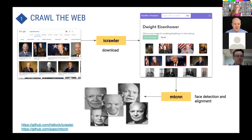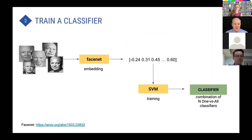After that, we perform face detection and alignment using MTCNN in order to have aligned faces. On these faces, a FaceNet pre-trained model is applied, which enables us to extract a set of features that are then used to train a combination of N one-versus-all classifiers.